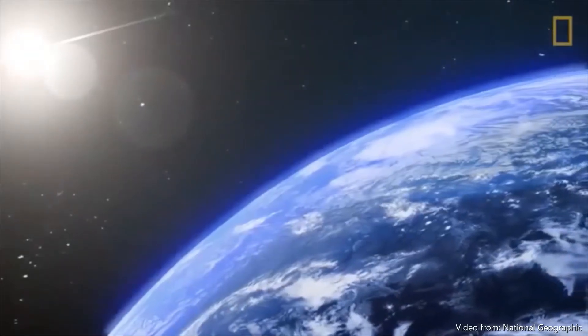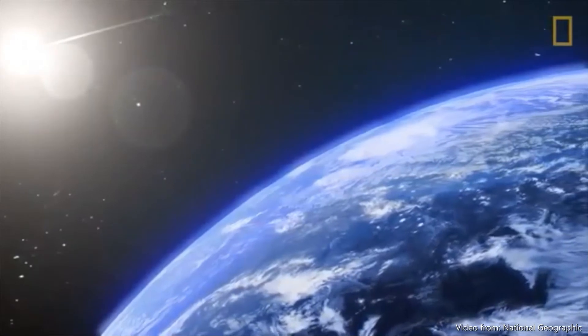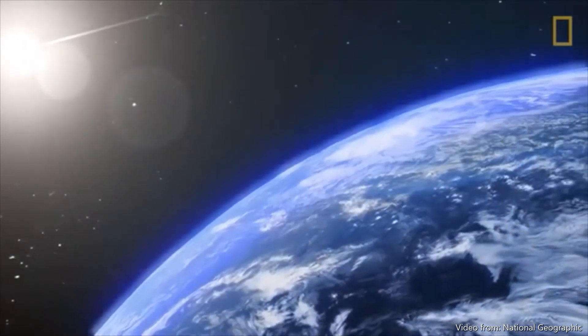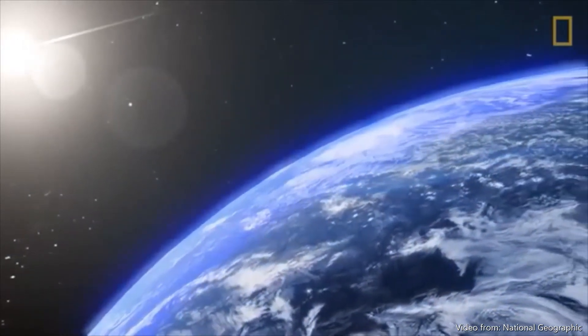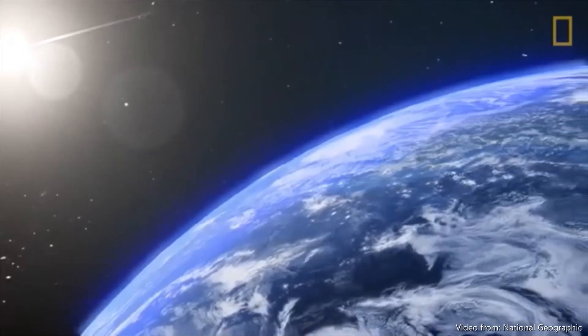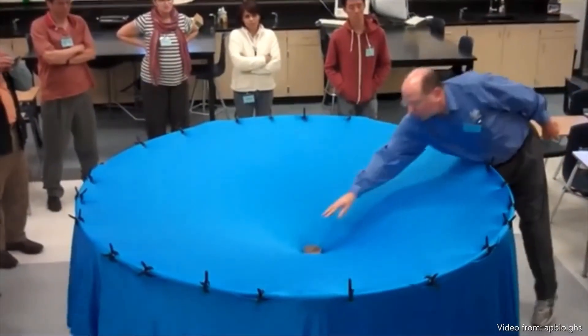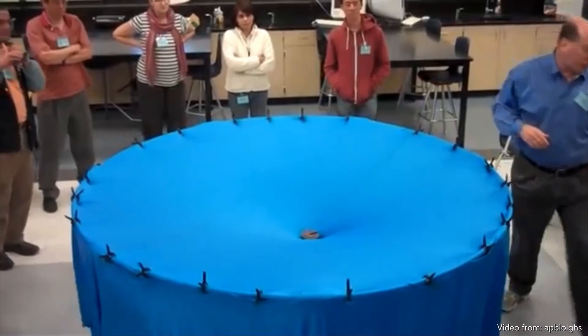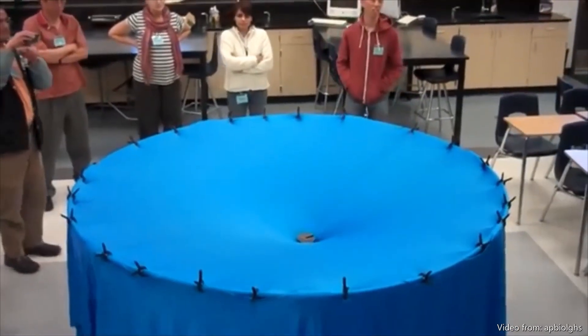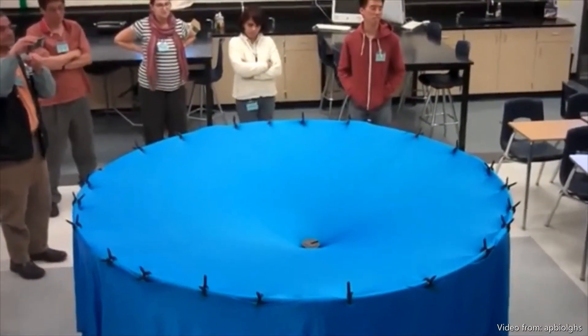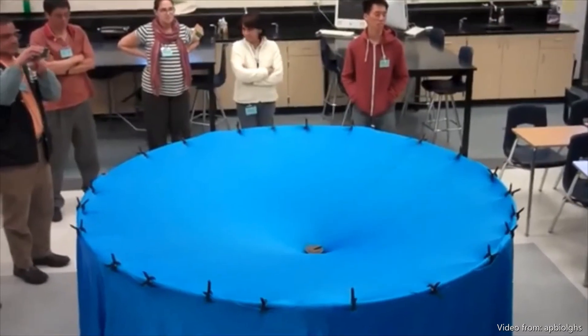For many years, the world believed that gravity is a mysterious force that acts at a distance from one object to another. But Einstein proved otherwise. Let us use the example of Einstein as an illustration. A ball was placed in the middle of a trampoline. The ball would press down on the fabric, making a curve.